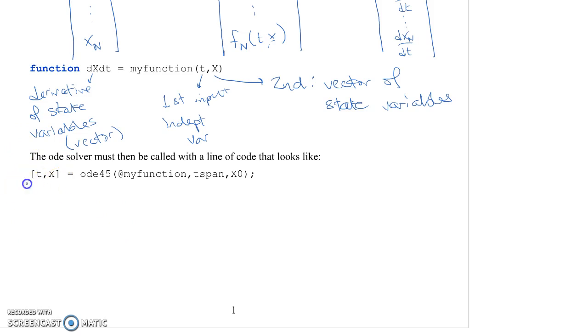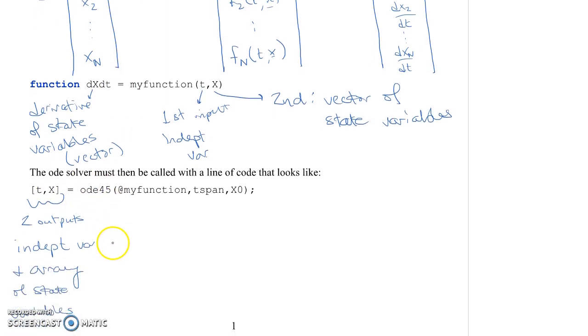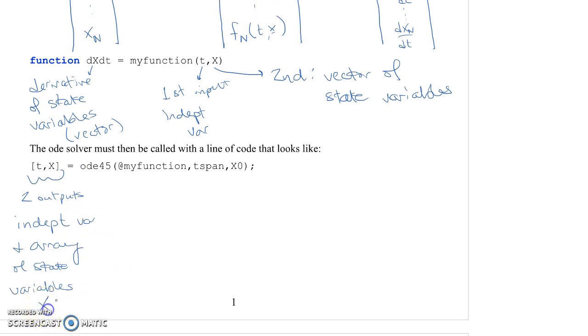So the ODE solver, you'll call that with a line of code that looks like this. You'll have two outputs to ODE45, and these outputs consist of the first one being your independent variable, that's T, and the second one, capital X output, is an array of state variables. Before I was talking about X as a vector of state variables, and this output of ODE45 is an array. It's an array instead of a vector, it's a matrix, because you have your vector of state variables at multiple different time points. So it's an array of state variables, X of T.